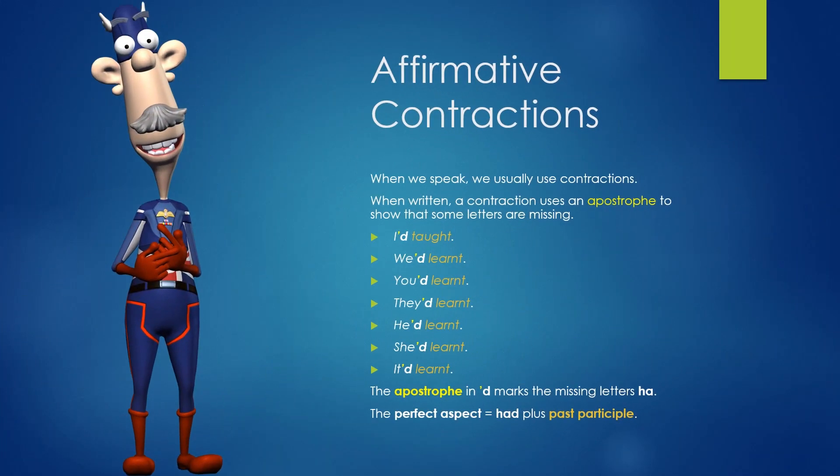Affirmative Contractions. When we speak, we usually use contractions. When written, a contraction uses an apostrophe to show that some letters are missing. I'd taught, we'd learnt, you'd learnt, they'd learnt, he'd learnt, she'd learnt, it'd learnt. The apostrophe D marks the missing letters H and A. The perfect aspect is had plus past participle.